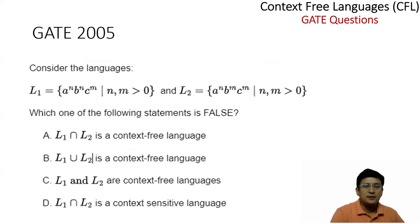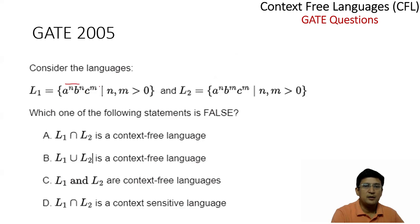Let's take another question. It says L1 is {a^n b^m c^n} where n, m ≥ 0. This language involves a comparison between a's and c's, but M is not being compared here. We say that L1 is context-free.